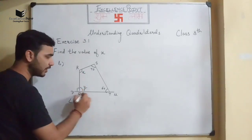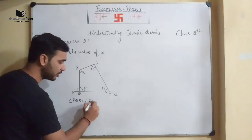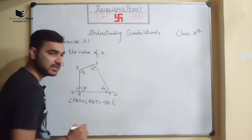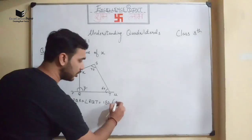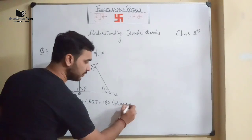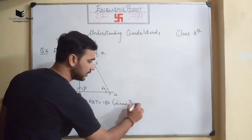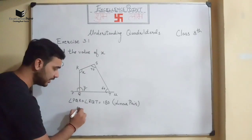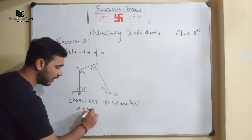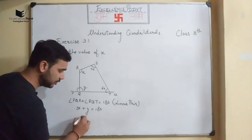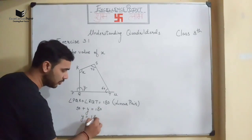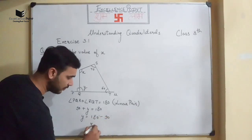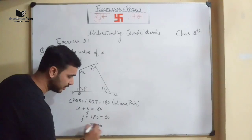Angle PQR + angle RQT = 180° because of linear pair. Substituting: 90° + y = 180°, so y = 180° − 90° = 90°.